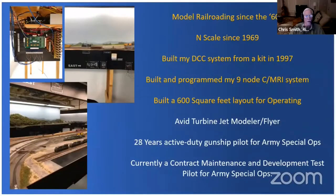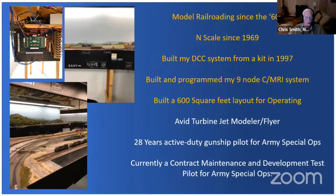A little bit about me. I've been model railroading in N-scale since 1969. I built my DCC system from a kit in 1997 and it's still running the layout. I also built and programmed a nine-node CMRI system that is up and operating on a 600 square foot layout. I'm also a crossover hobbyist — an avid turbine jet modeler and flyer, and I spent 28 years on active duty as a gunship pilot for Army Special Ops, and currently I'm a contract maintenance and development test pilot for Army Special Ops.